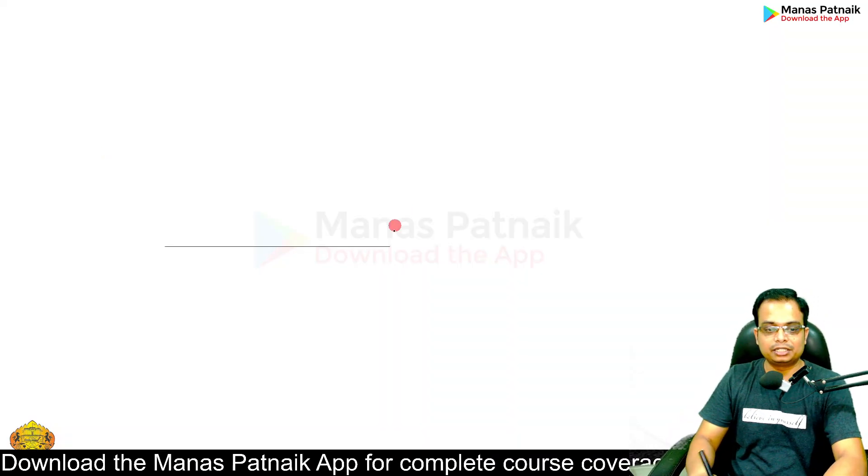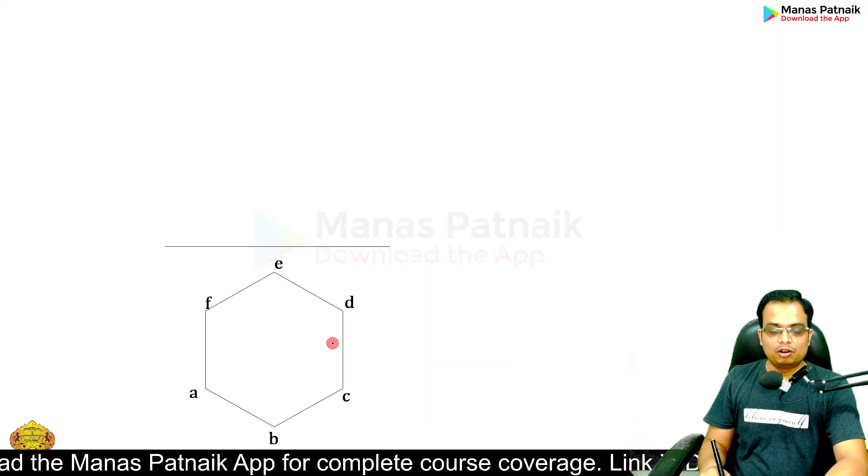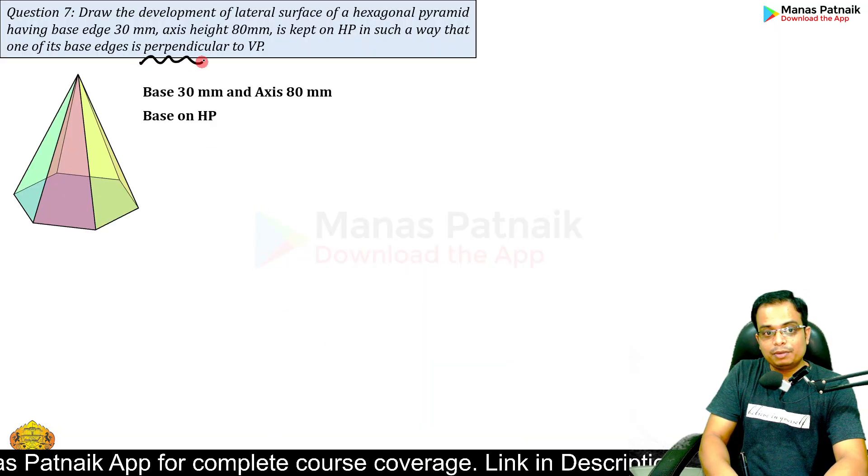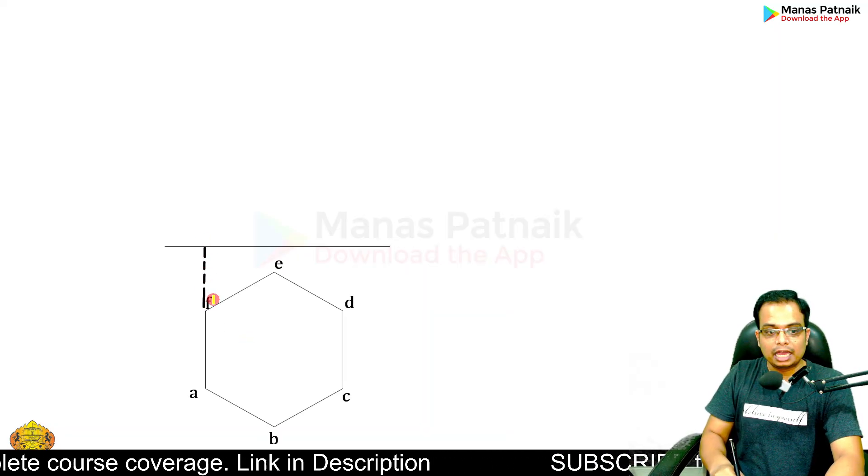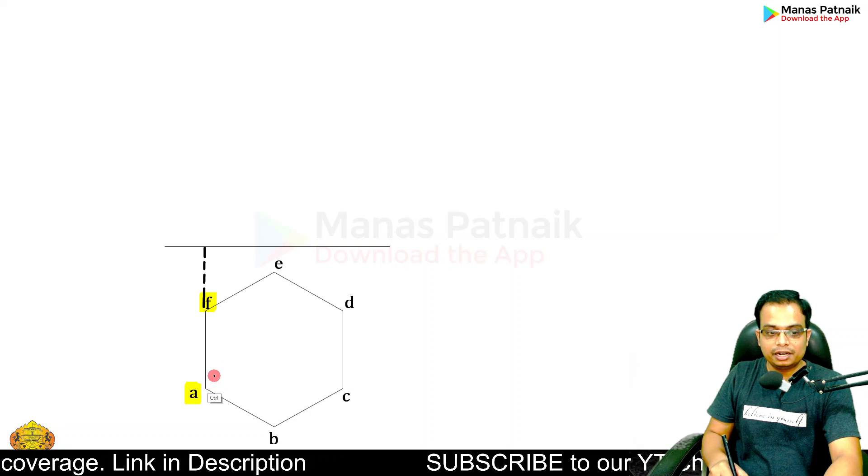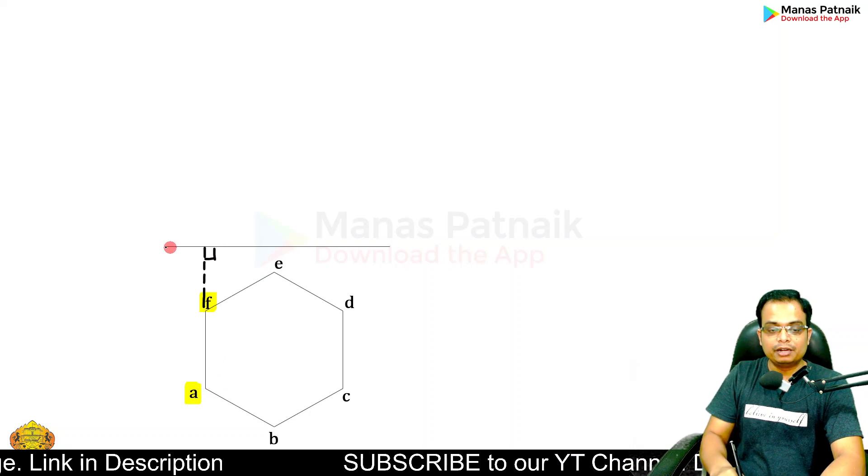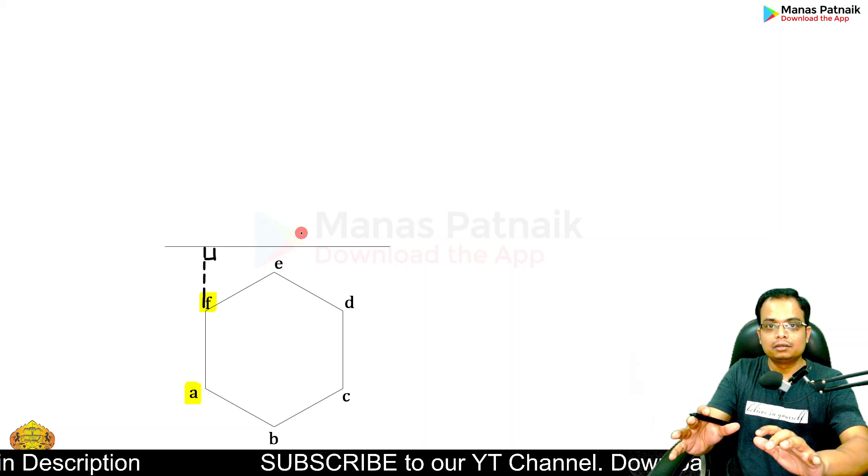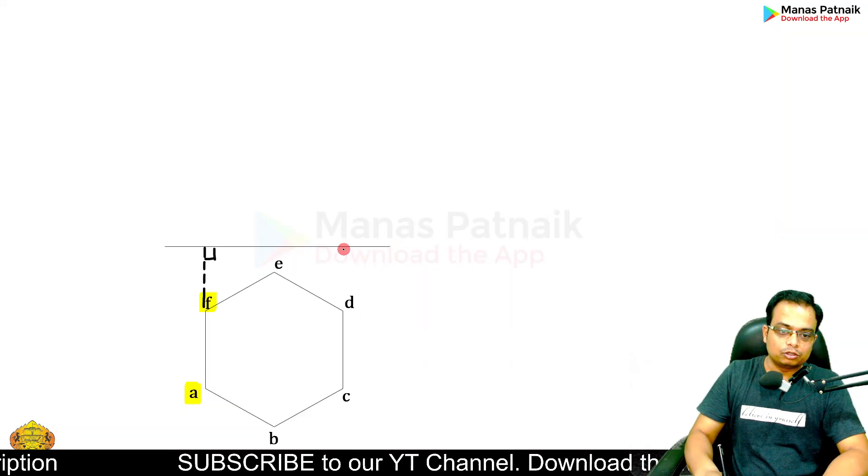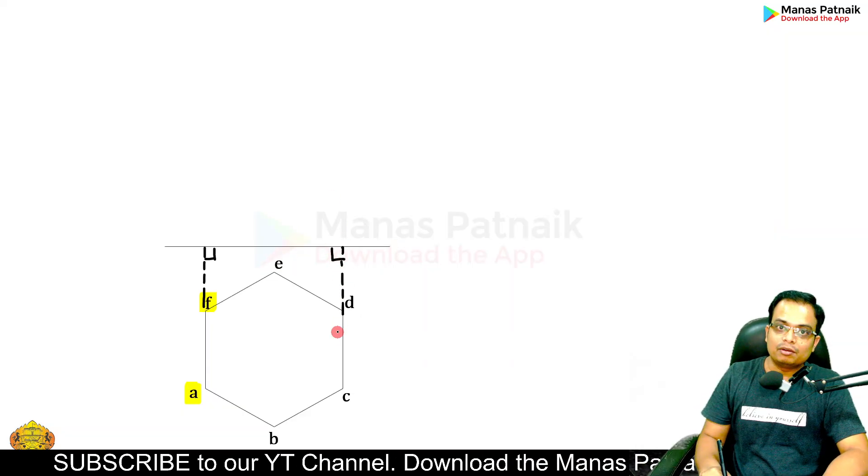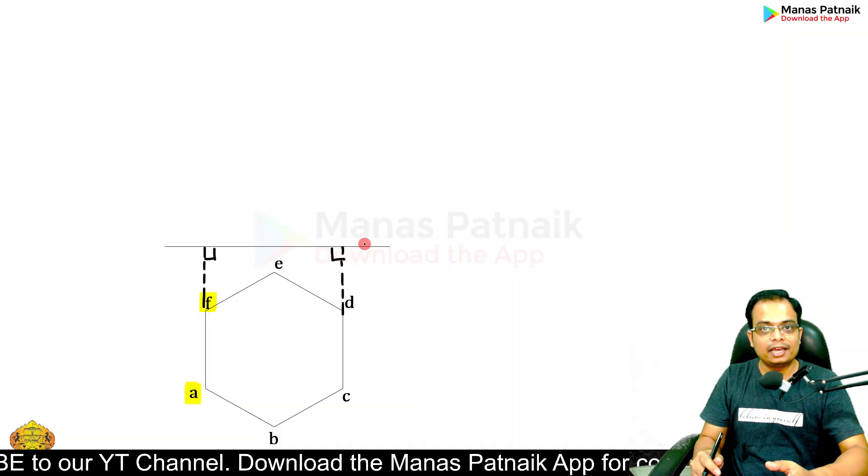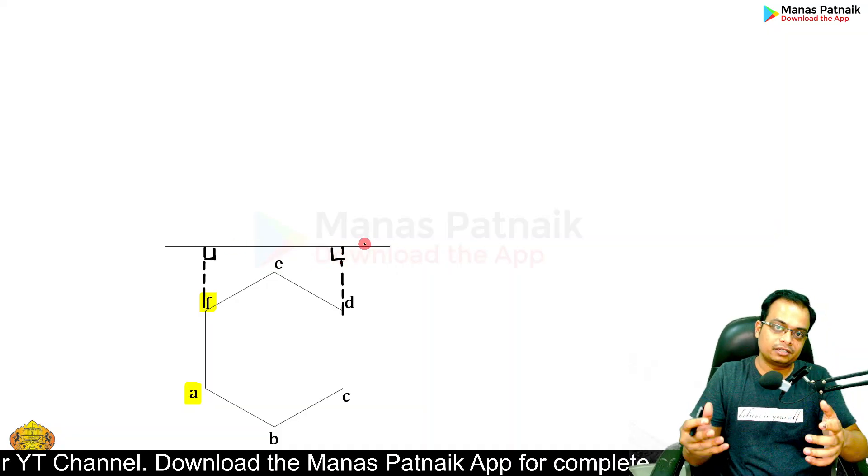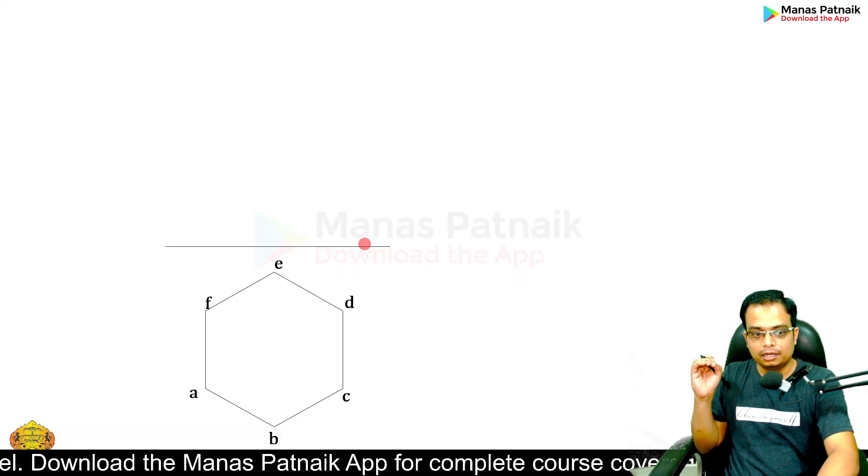Make a hexagonal pyramid. It has been given in the question that one of the base edges is perpendicular to VP. You can clearly see this base edge FA is perpendicular to XY line, which means it is perpendicular to VP. Along with this, CD has also become perpendicular to XY line.